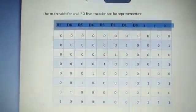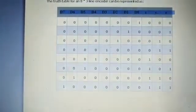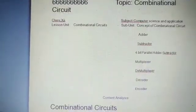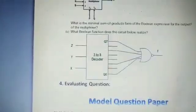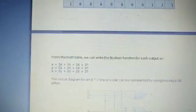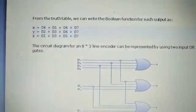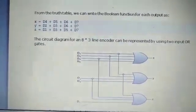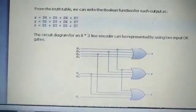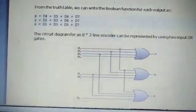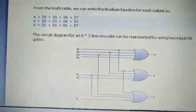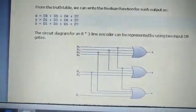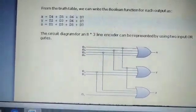From the truth table, we can determine that y0 or x will be selected when we combine d4, d5, d6, and d7. Y output will be selected when we combine d2, d3, d6, and d7. Z will be selected when d1, d3, d5, and d7 are combined.